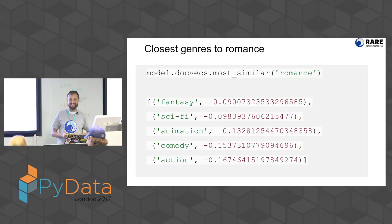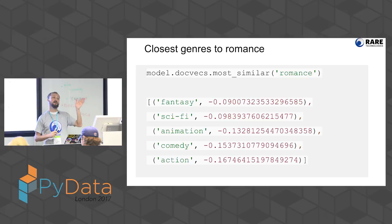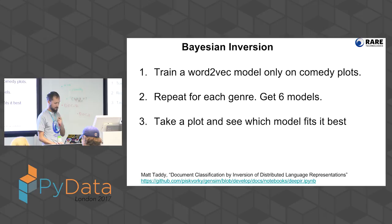Does that mean I can have tags like romantic comedy? Yes, I can have comedy, comedy-animation — I can have as many as I want. I can have doc one, comedy, romance — anything. The number of tags is not limited.